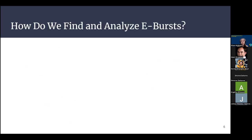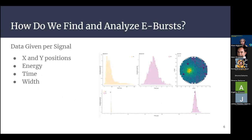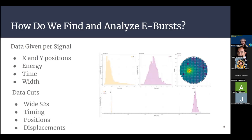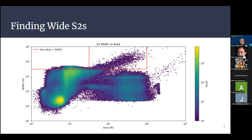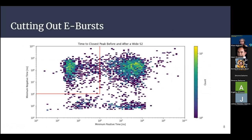Investigations into electron bursts have also been seen in a LUX paper where the energy of the S3 signal has been directly compared to its S2 signal in a two-dimensional histogram. Both of these results should be able to be replicated using a small data sample from the XENONnT experiment. The main question we are investigating is: how do we find and analyze these electron bursts? Data cuts allow us to zoom in on where we are most likely to find something. A single detection of light carries so much data with it that we can cut that data in any way.